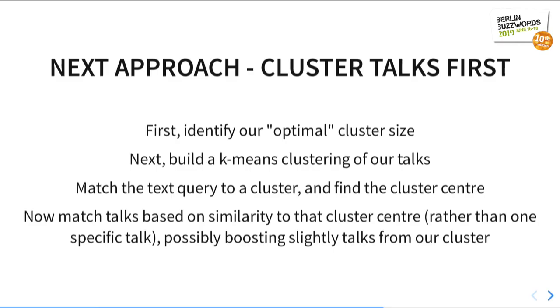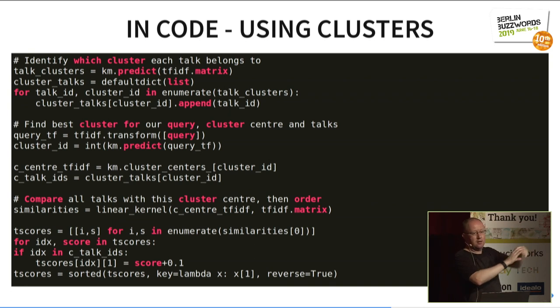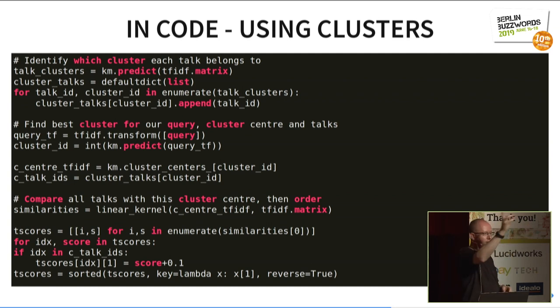Our next AI approach is to identify the optimal cluster size — which in this case seemed to be 51 — build the k-means clustering at that size, match the text of our query into a cluster, find the center of that cluster, and then do regular Lucene-style text similarity matching from there. With k-means clustering it's going to group the talks together and tell us the center of that cluster in the TF-IDF space — a virtual talk that is the middle of all the other talks in the cluster. We match onto that and work from there.